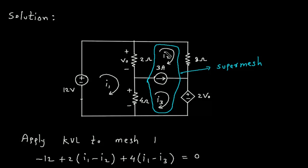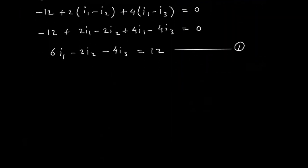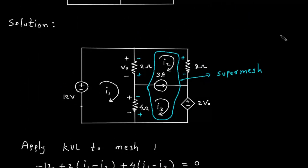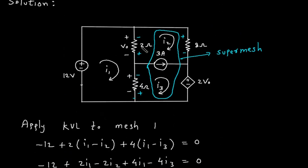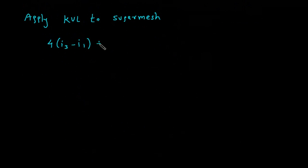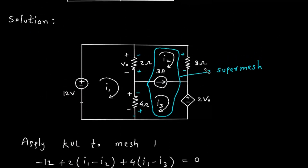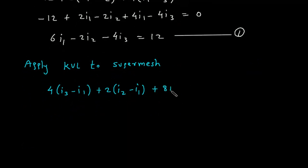So according to the direction of this current, this will be positive, this will be negative. Here this will be positive, this will be negative. Here this will be positive, this will be negative. So we will apply KVL to the super mesh. Starting from here: plus 4(I3 minus I1).